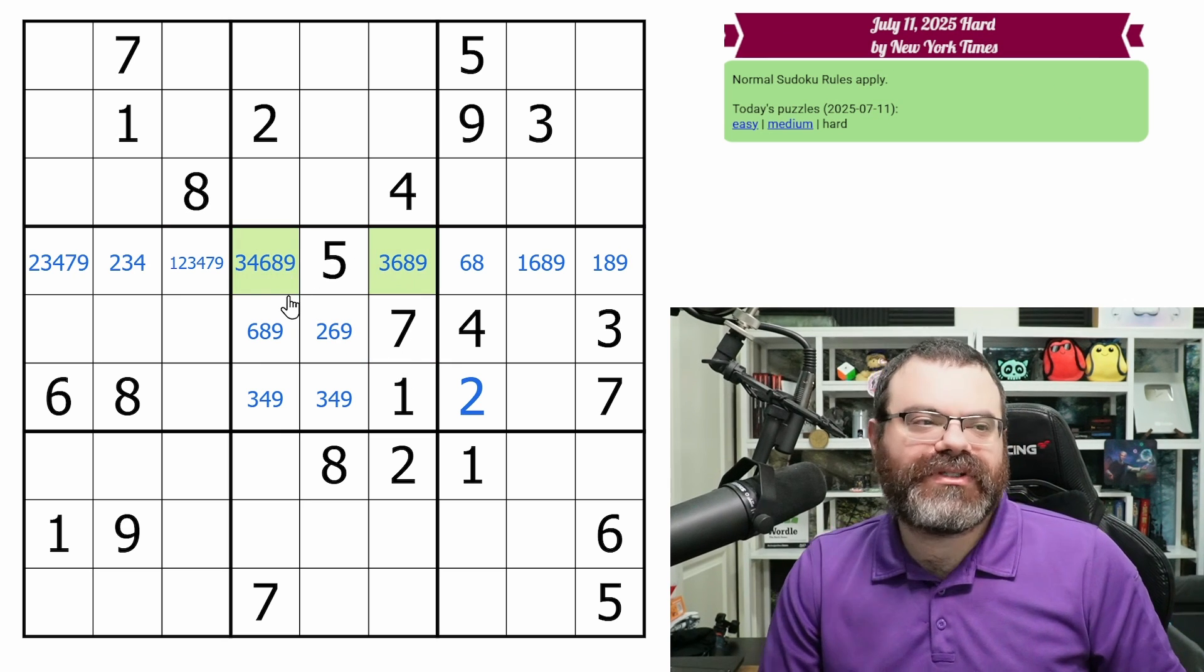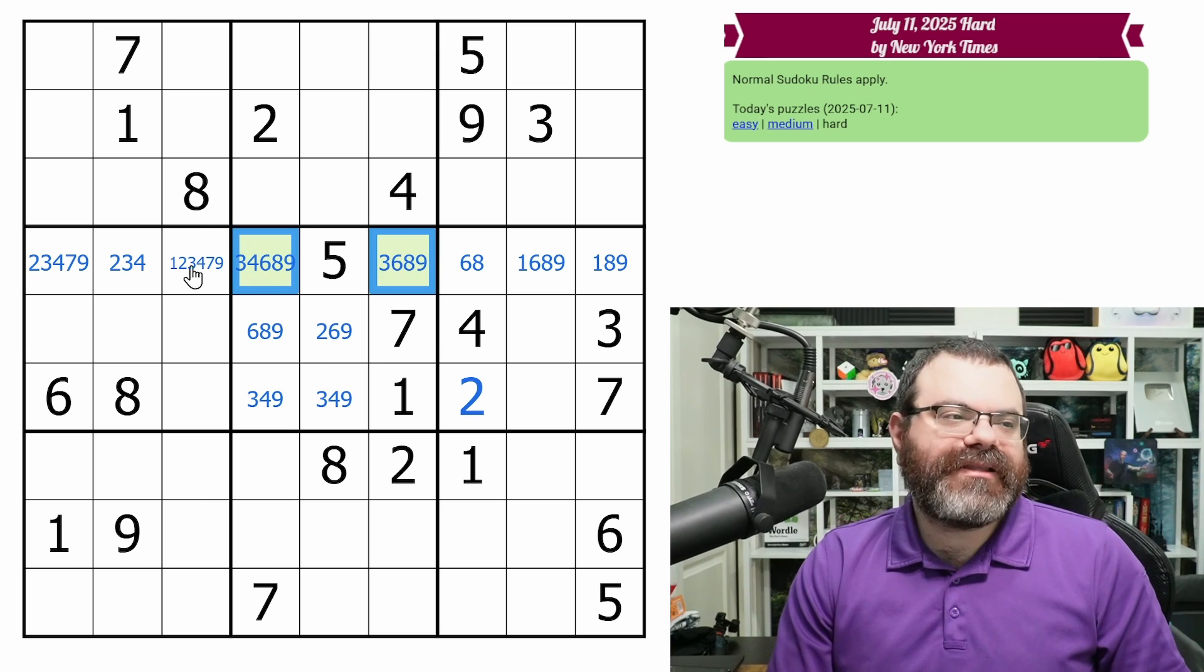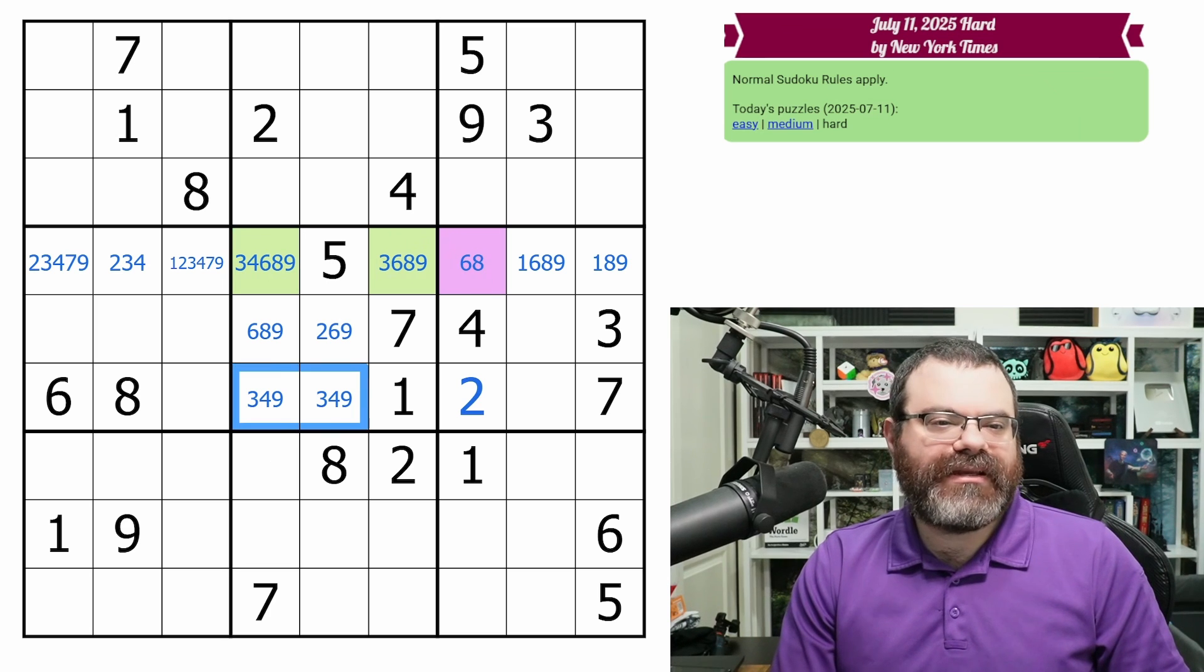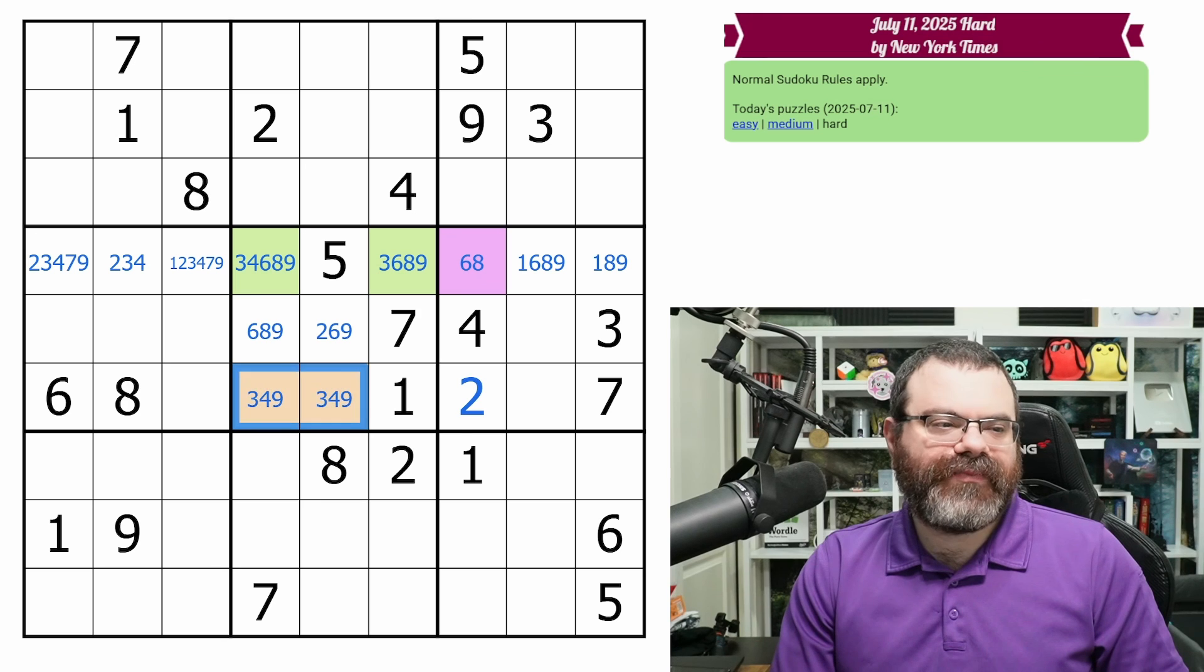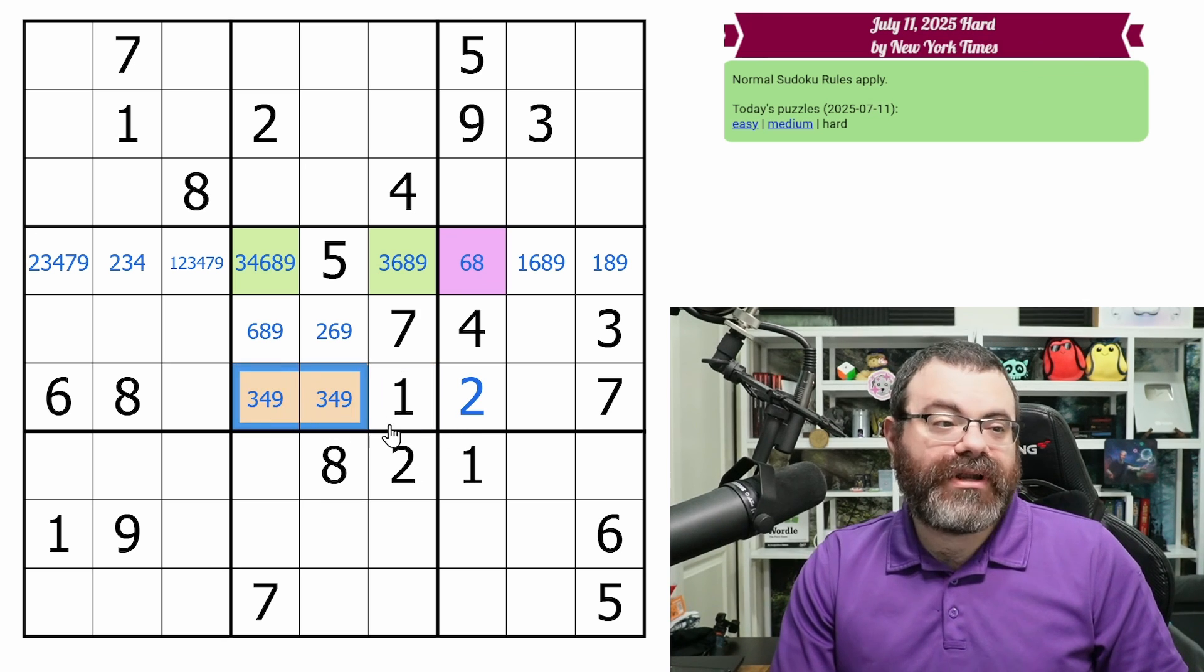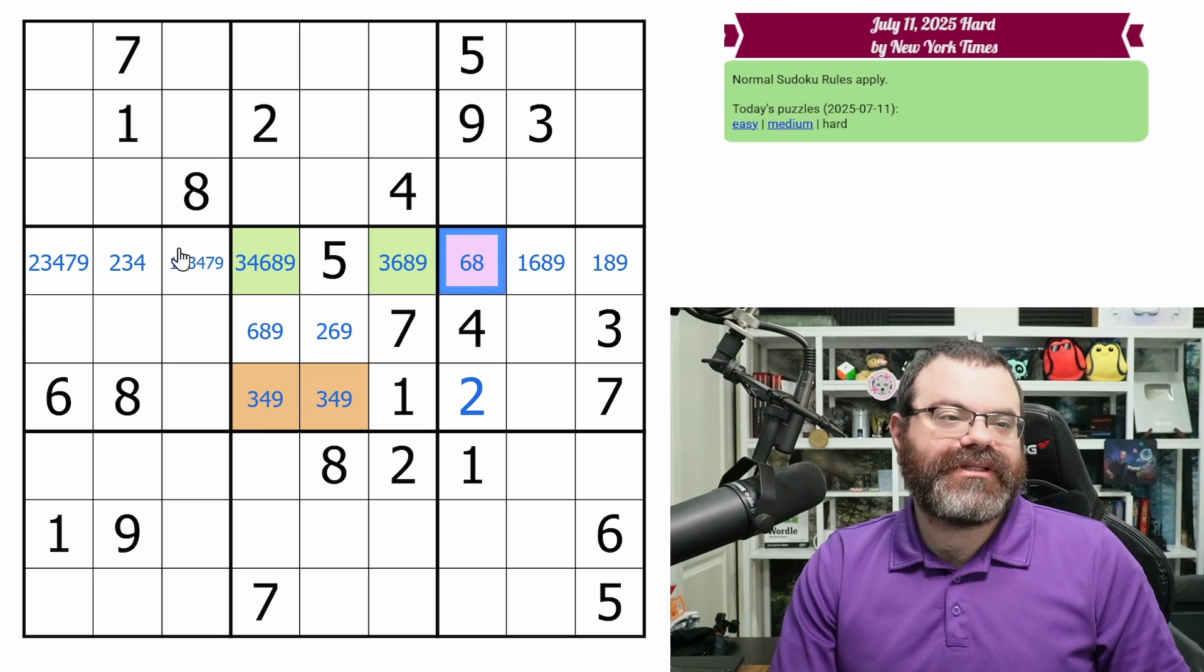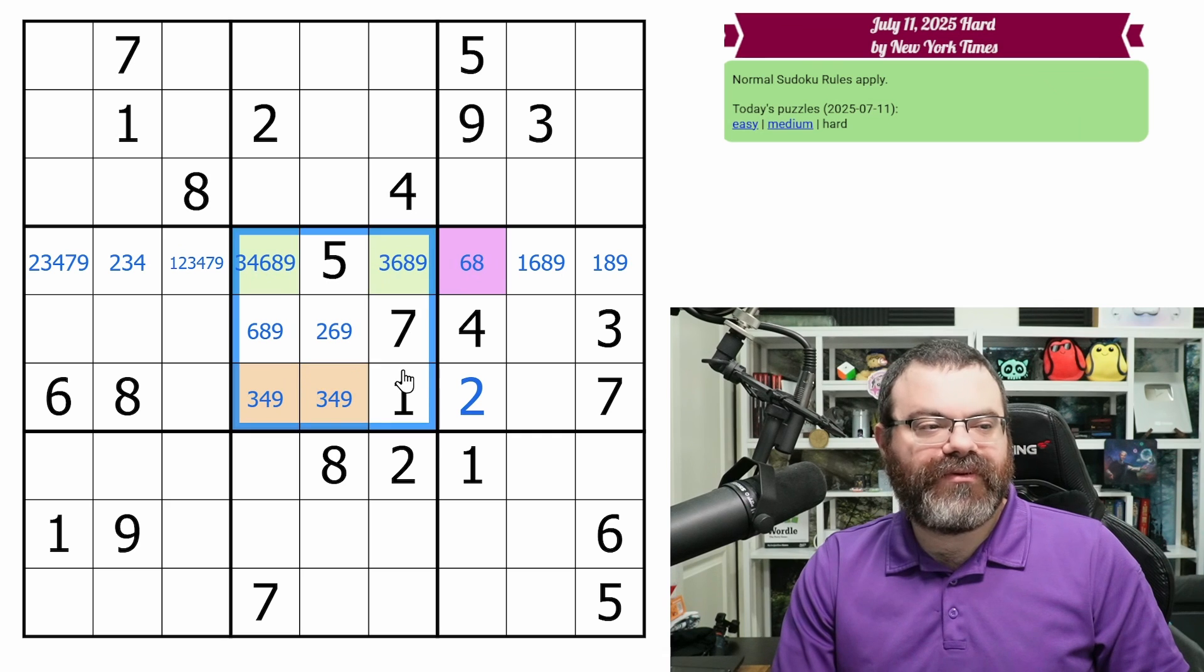So let's take this from the start. The thing that we're noticing first is that we have this nice six, eight cell here. And then down here, I'll make them orange. We have these two orange cells down here, which are both three, four, nine. So this six, eight would be a six, eight pair if there was another six, eight in the row. And this three, four, nine would be a three, four, nine triple if there was another three, four, nine in the box.